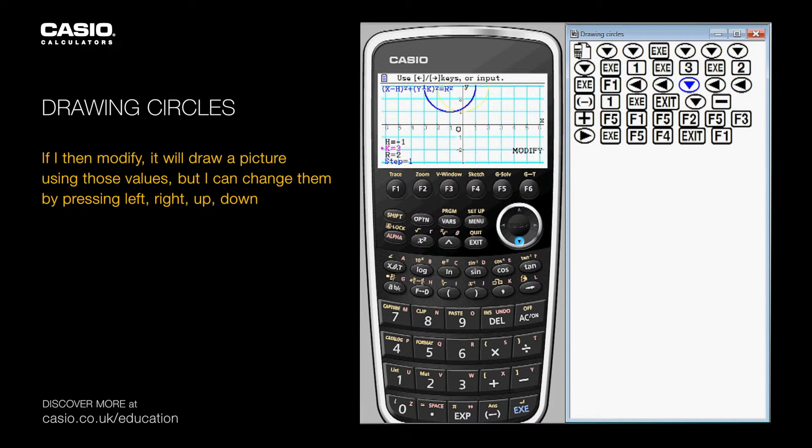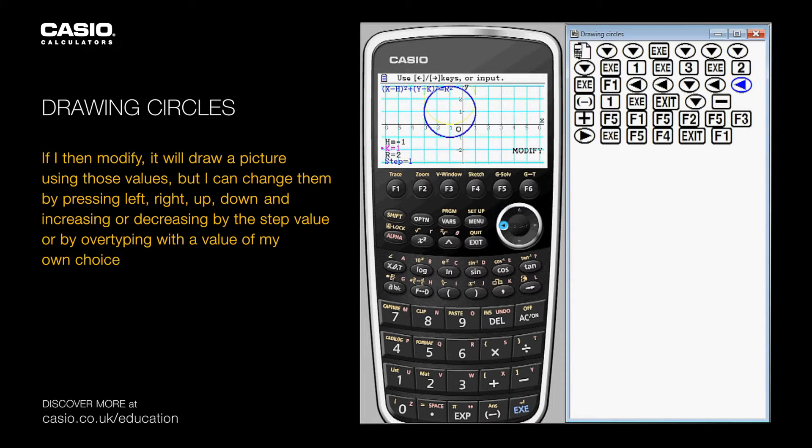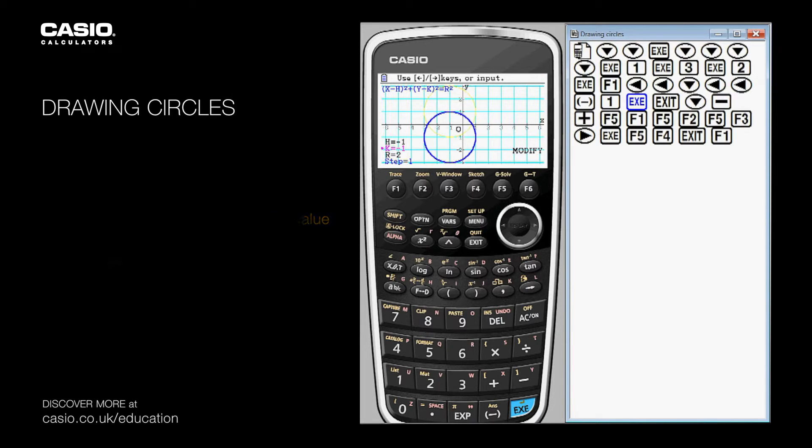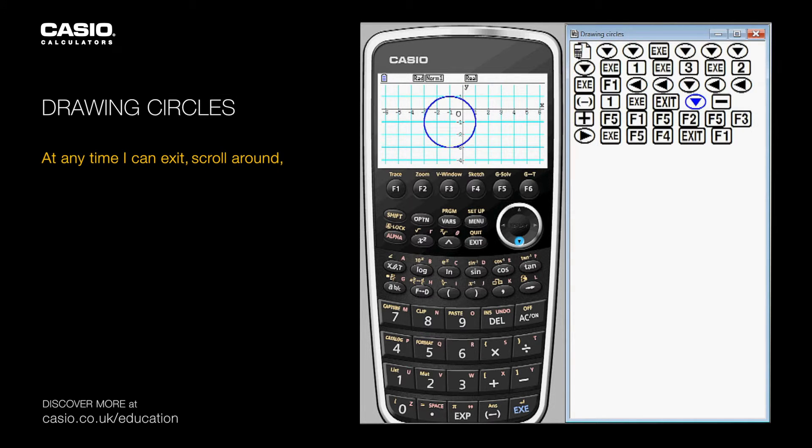I can change them by pressing left, right, up, down and increasing or decreasing by the step value, or by over typing with a value of my own choice. At any time I can exit, scroll around, zoom out and zoom in.